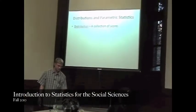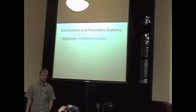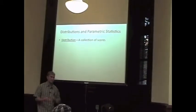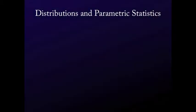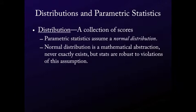So distributions and parametric statistics. A distribution is just some collection of scores, like all the test scores in the class. You guys are probably fairly familiar with this. Parametric statistics assume a normal distribution. Everyone is probably familiar with a normal distribution.